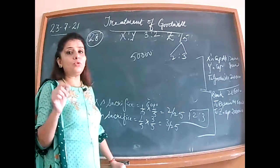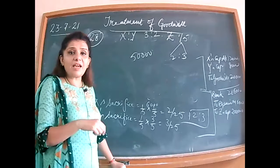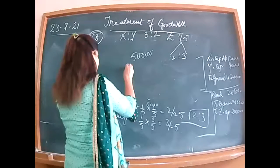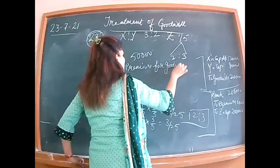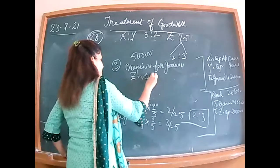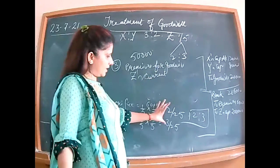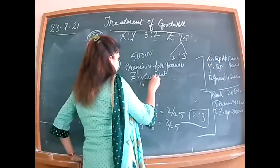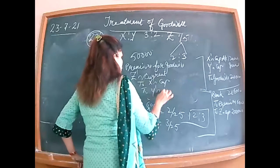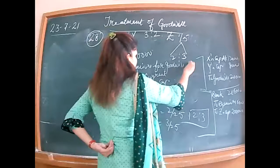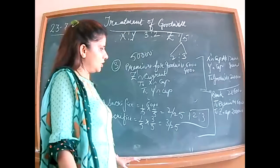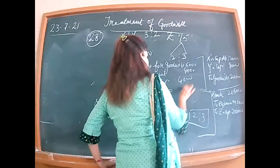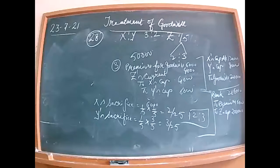For the deficiency or shortfall of 4,000, debit Z's current account. Third entry: Premium for Goodwill account debited, Z's current account debited, to X's capital and Y's capital in their sacrificing ratio of 2 is to 3. Premium for goodwill is 6,000 and Z's current account is 4,000 — total 10,000 split as 4,000 and 6,000.